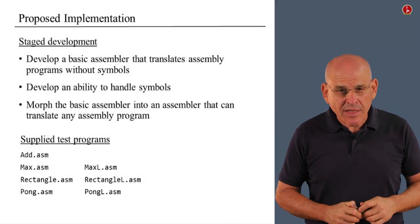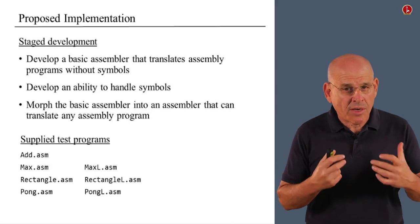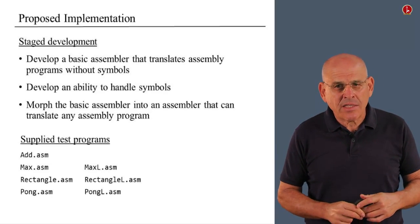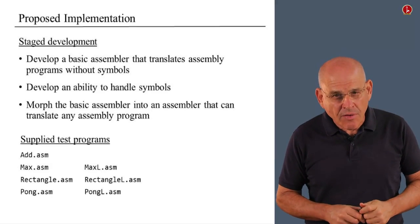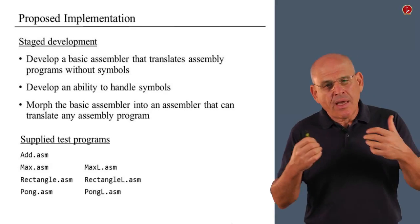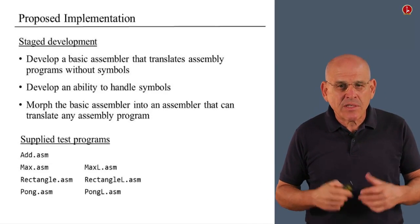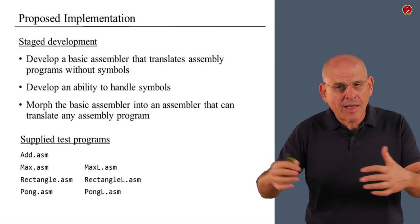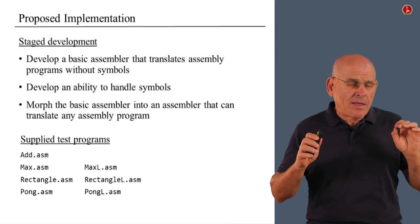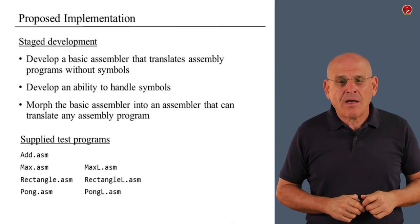To carry out unit testing, we provide a set of seven test programs. The first program, add.asm, is very simple. Each of the next three programs is supplied in two versions — with symbols and without symbols. The without-symbol version of each program has a capital L suffix, standing for 'less symbols' — so MaxL, RectangleL, and so on. In the next few slides, we'll talk about each of these programs in isolation, and that's exactly what you should do in your project — test your assembler on each program at different stages of development.